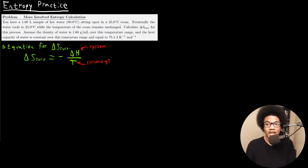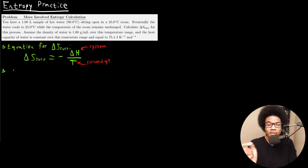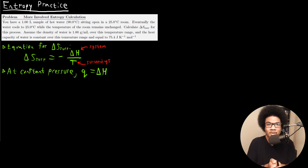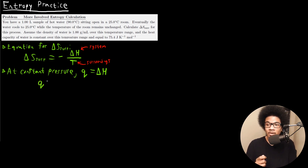The first thing we want to do is calculate delta H for the system, our hot water. This process is happening at constant pressure, and at constant pressure the heat transfer equals the enthalpy change — that's literally the definition of enthalpy. So we can use the equation: heat transfer equals number of moles times molar heat capacity times delta T. We were given a molar heat capacity, so we can use this to calculate the heat transfer.